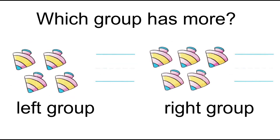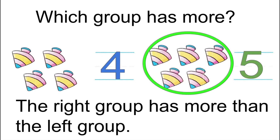Which group has more — the left group or the right group? That's right. The right group has more than the left group. Five is more than four.